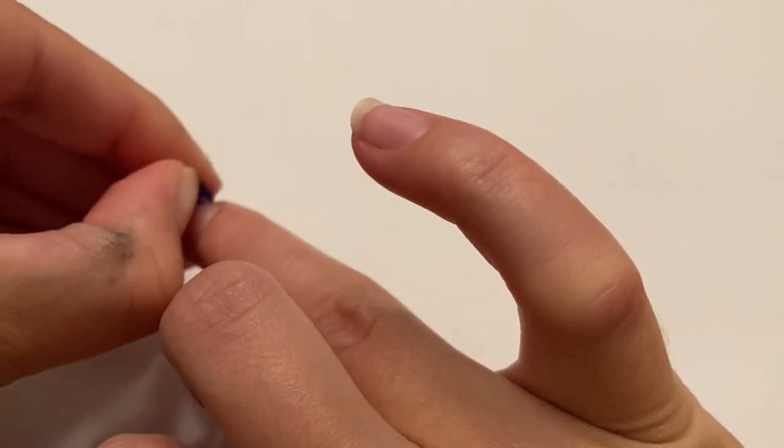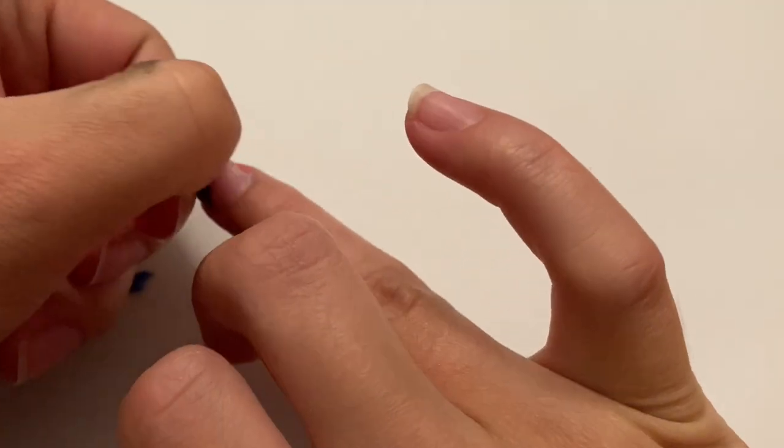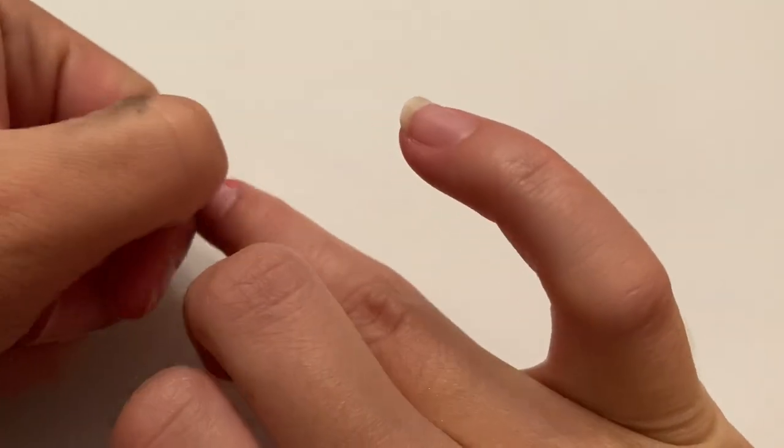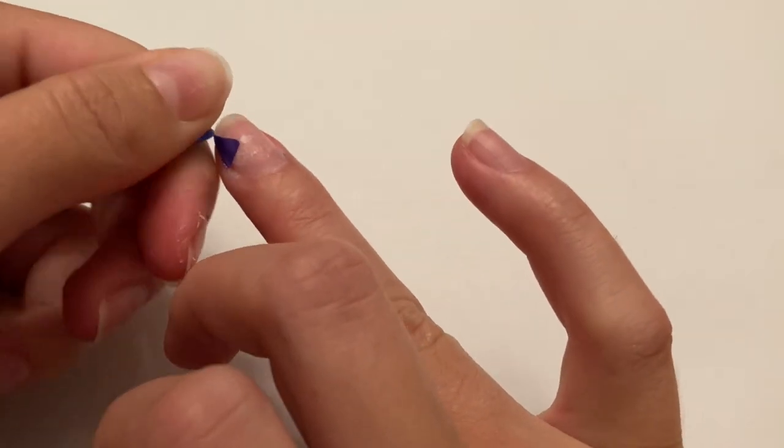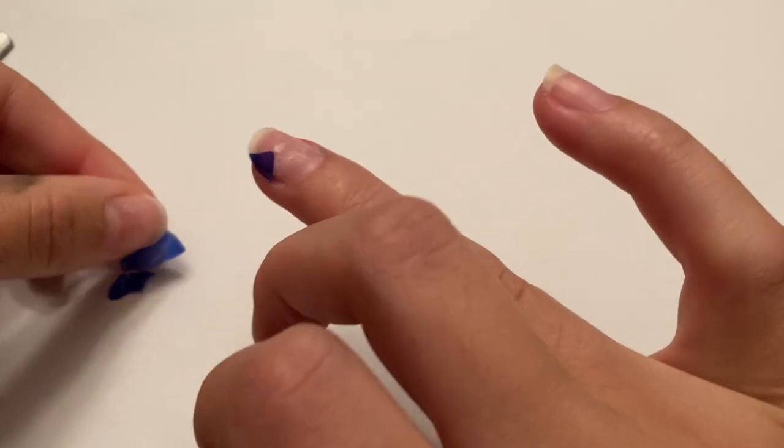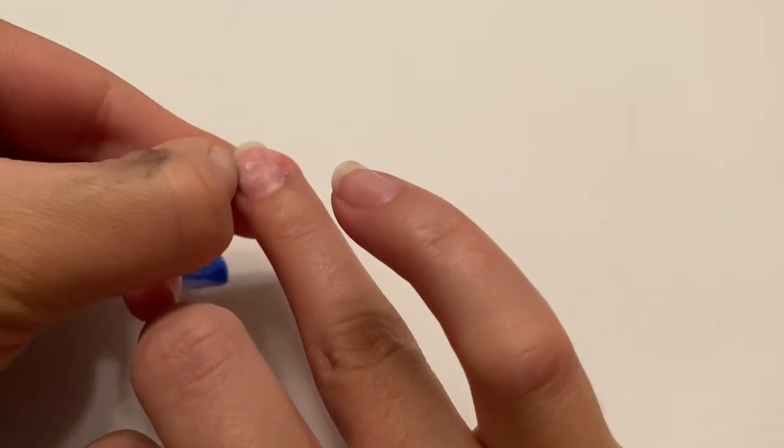A little tip for any of you that might be struggling with peel-off base coat, it does sometimes help if you do two layers of peel-off base coat that might help you peel it off a little bit easier. So I definitely recommend trying that if you have been struggling with it.